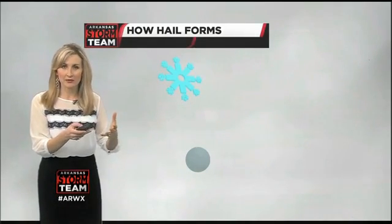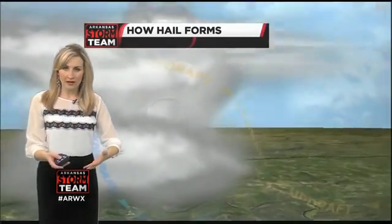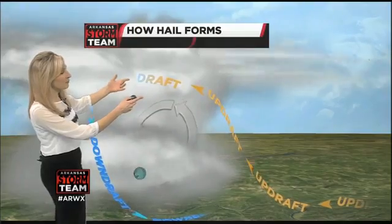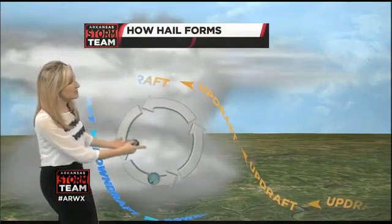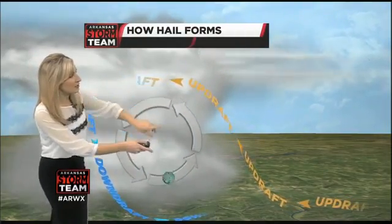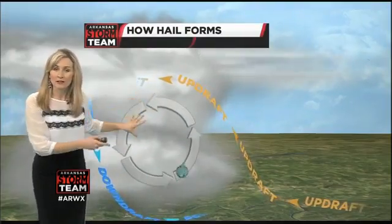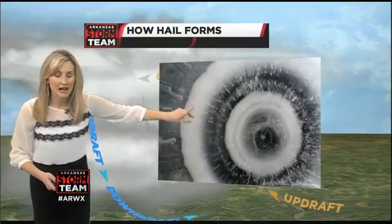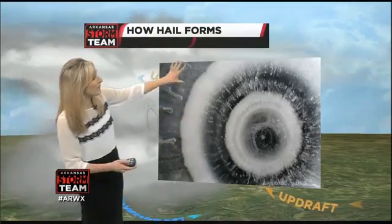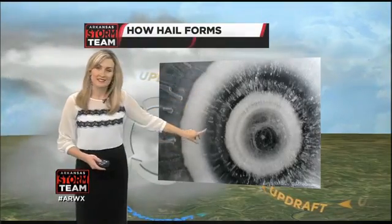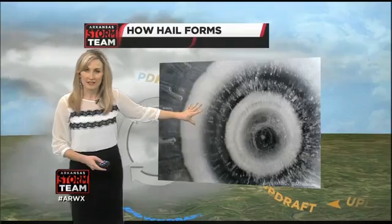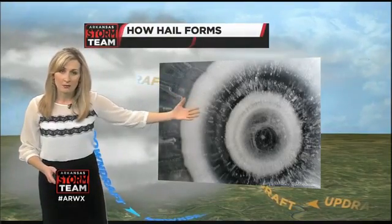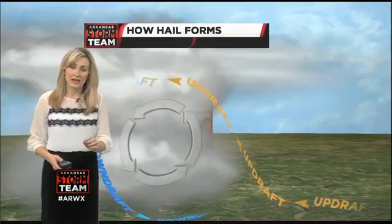That hailstone will start to fall back to the ground, but right before it reaches the ground, the updraft picks it back up. This causes it to circulate within the cloud, forming layer upon layer of ice on that hailstone. If you cut a hailstone in half, you can see the rings inside, the layers of ice looking like the inside of a tree. The stronger the updraft, the larger the hailstone.